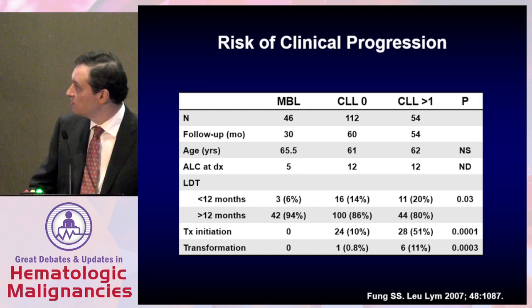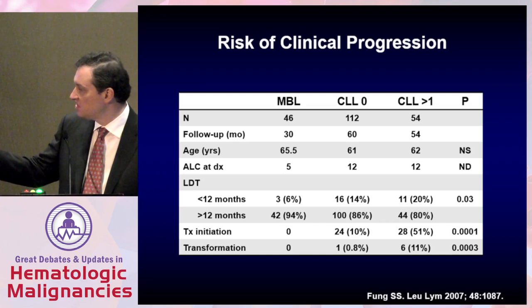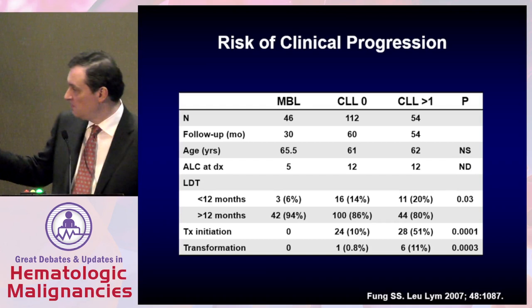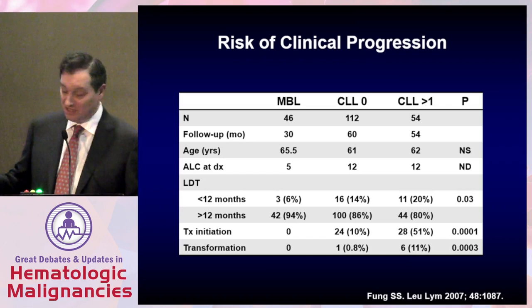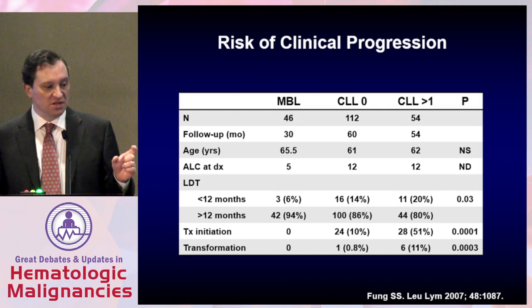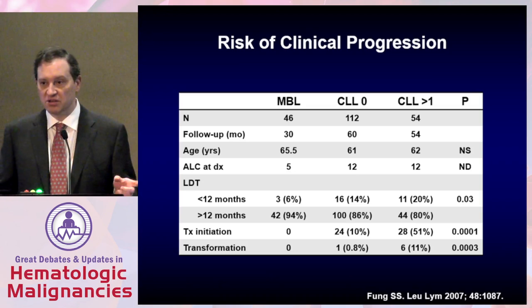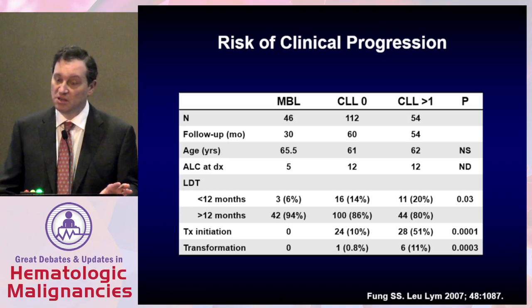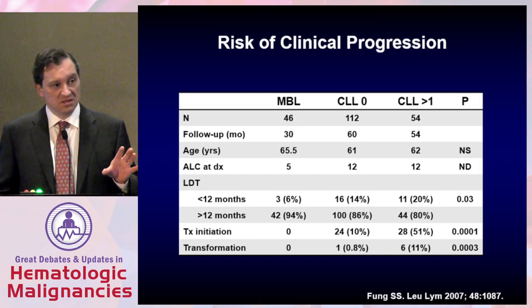In terms of risk of clinical progression, lymphocyte doubling time is an important predictor. A doubling time of greater than 12 months was associated with only an 8% risk of clinical progression, whereas a doubling time of less than 12 months was associated with an 84% chance of progression. Lymphocyte doubling time does serve as a way to assess a patient's likelihood of progressing. It is important to remember that in MBL patients, the majority of their lymphocytes may not be monoclonal or CLL phenotype cells, so it lacks sensitivity — but if you see it, it is certainly predictive.